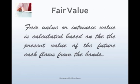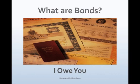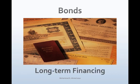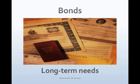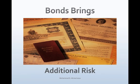Fair value or intrinsic value is calculated based on the present value of the future cash flows from the bonds. Market value is the price at which a bond is selling in the market. Bonds are IOU instruments — debt instruments issued by borrowers to raise money. Corporations issue bonds to finance long-term capital needs. Raising money with bonds is cheaper compared to preferred stock and common stock, as the cost of debt is generally lower, though debt increases the financial risk of the company.